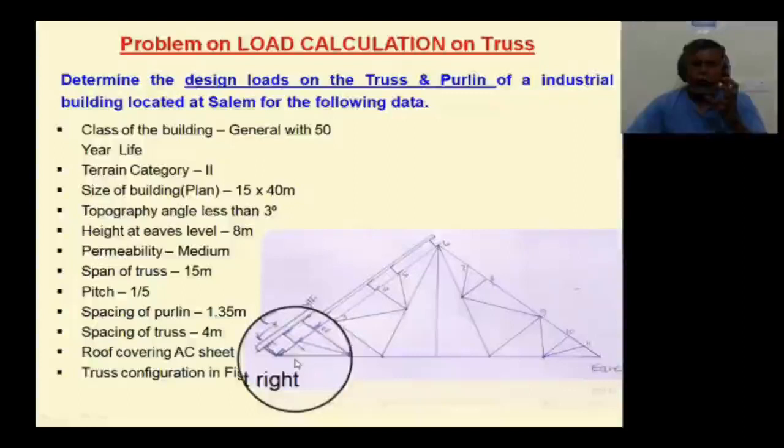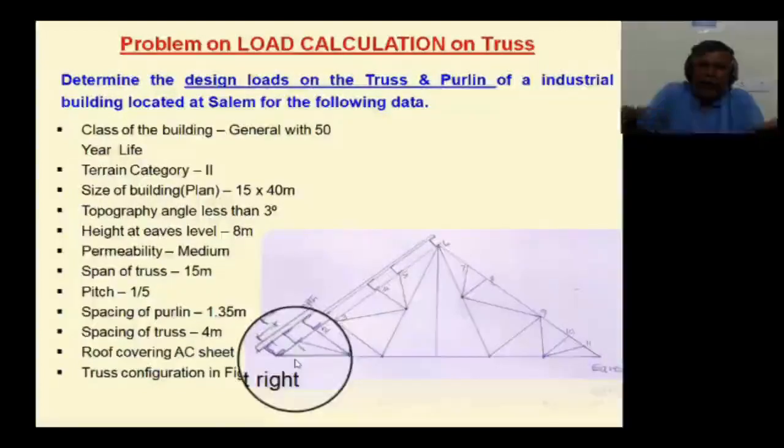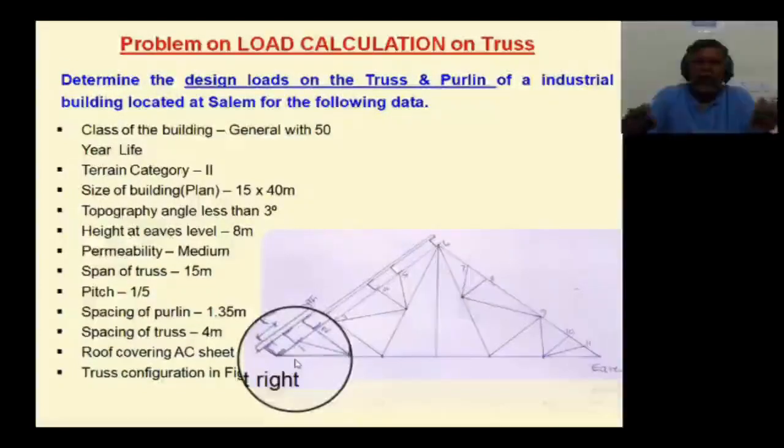We have to group them. For the 50 members of the truss, top chord members are one group based on the highest load, and bottom chord members are another group based on the highest load.